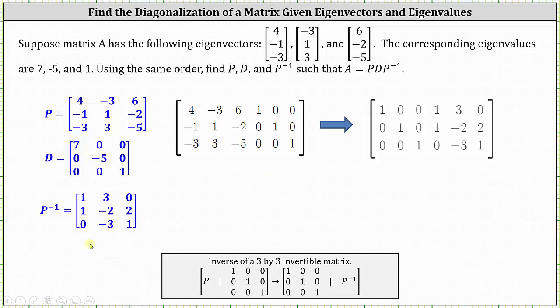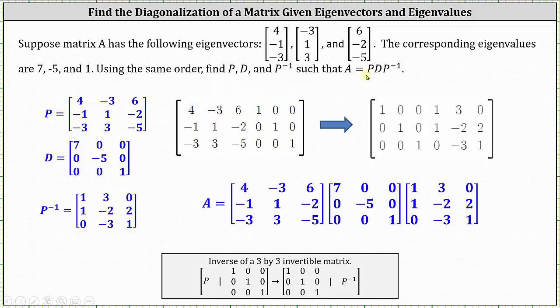So now we know the diagonalization of matrix A is equal to, again, P times D times P inverse, where again, matrix P is formed using the eigenvectors, matrix D is formed using the eigenvalues, and the third matrix is the inverse of matrix P.